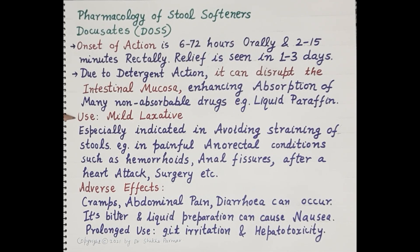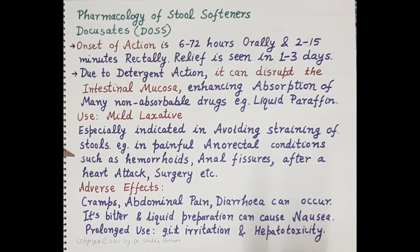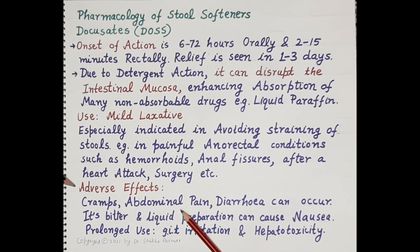Docusates are used as a mild laxative and are specially indicated in avoiding straining at stools — for example, in painful anorectal conditions such as hemorrhoids, anal fissures, after a heart attack, and after surgery. They exhibit mild side effects like cramps, abdominal pain, and diarrhea.